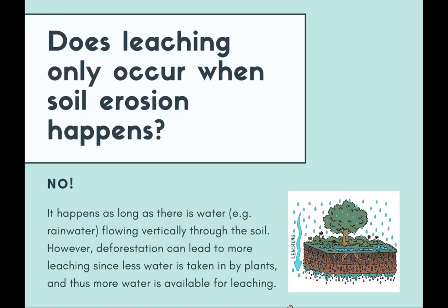Another question: does leaching only occur when soil erosion happens? The answer is no. Leaching can occur as long as there's water — as long as rainwater flows into the soil vertically downwards, there will be leaching. However, deforestation worsens the problem of leaching because when you cut down the trees and plants, less water is taken in by plants and therefore more water is available for leaching.